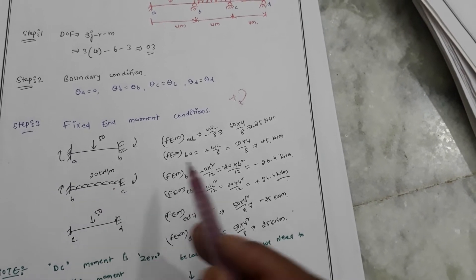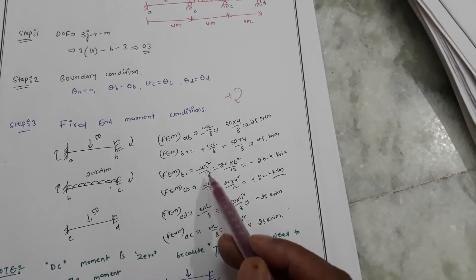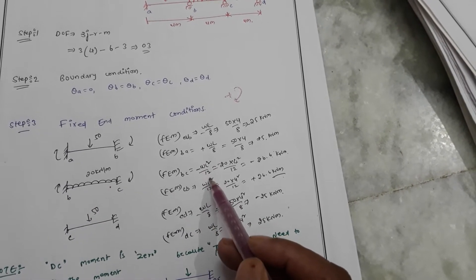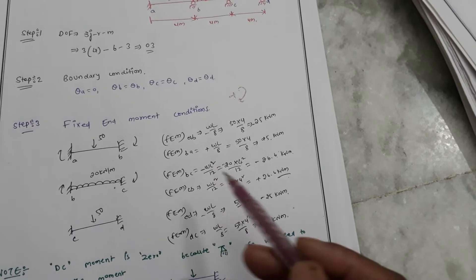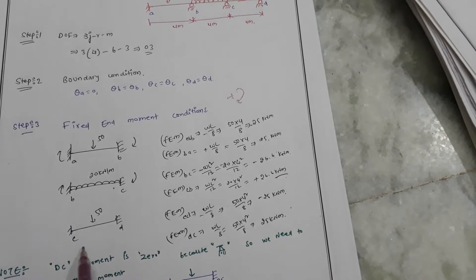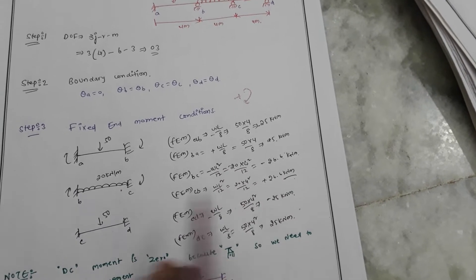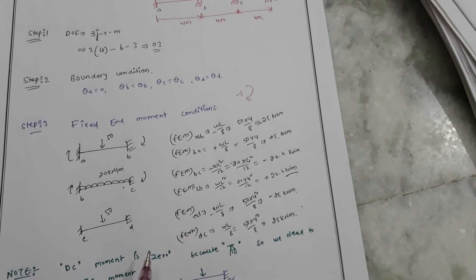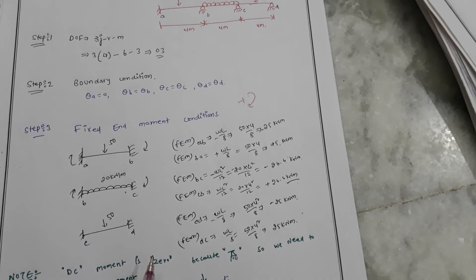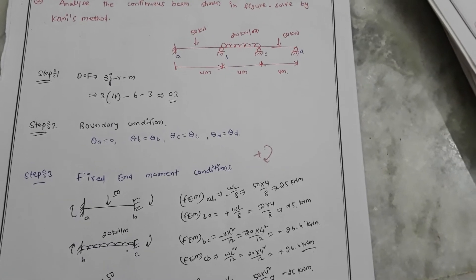Similarly, for a uniformly distributed load, the fixed end moment formula is wL²/12. And again for the point load we use wL/8.